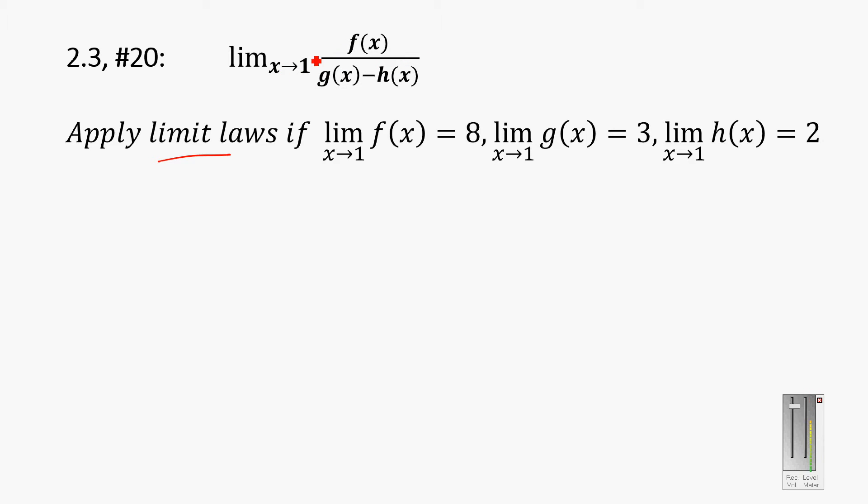The idea is that if I can get this to say the limit as x goes to 1 of f of x, right now this limit's being applied to the whole thing. But if I can get it distributed into each one of these terms individually, like limit as x goes to 1 of f of x, then I can just type in an 8. And if I can get limit of x to 1 of g of x, then that just becomes a 3.